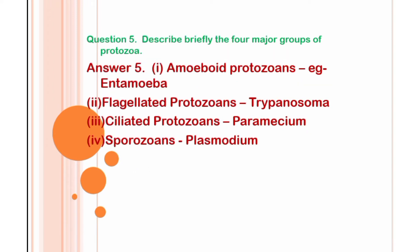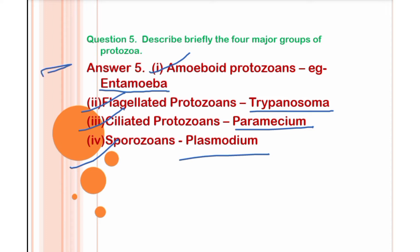Next question: describe briefly the four major groups of protozoa. First is amoeboid protozoa — example: Entamoeba (write underlined as it is a scientific name, following the rules of binomial nomenclature). Second is flagellated protozoa — example: Trypanosoma. Third is ciliated protozoa — example: Paramecium. Fourth is sporozoa — example: Plasmodium. These are the four major groups of protozoa.